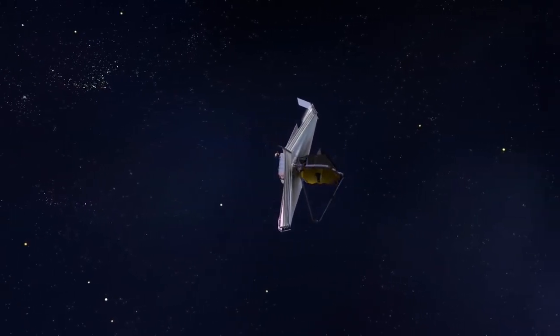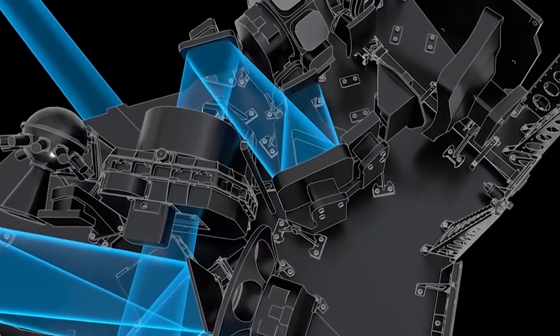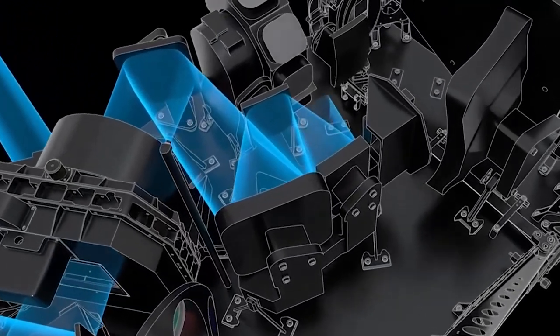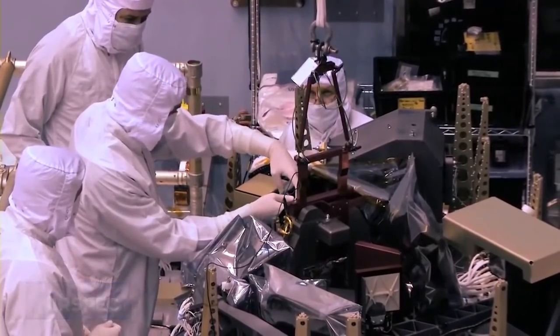In this location, the telescope's main instruments can cool to near absolute zero temperatures and receive the infrared light. Then, they can take that light and produce images, or analyze the light to learn what materials are present.